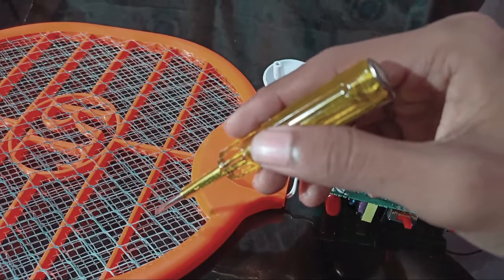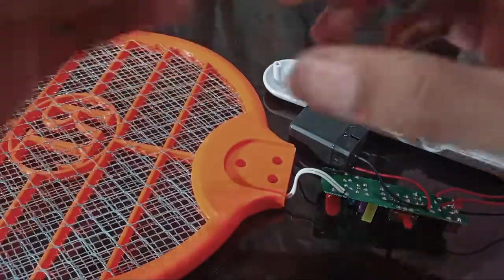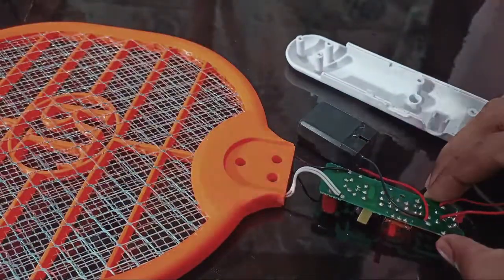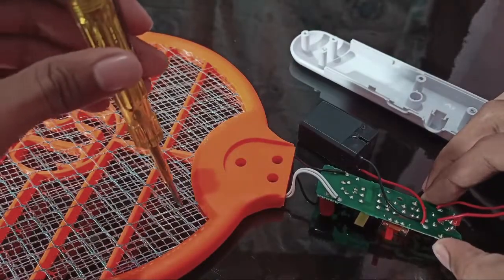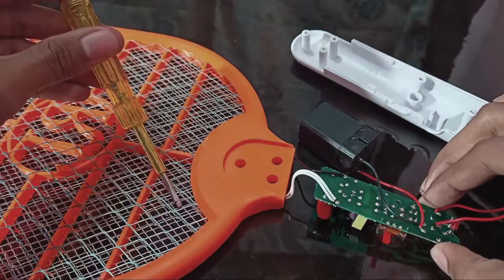When I turn the racket and carefully touch this tester to the inner mesh only, nothing is happening. But as soon as I touch this to the outer mesh as well, there is a spark. So that's how it works.